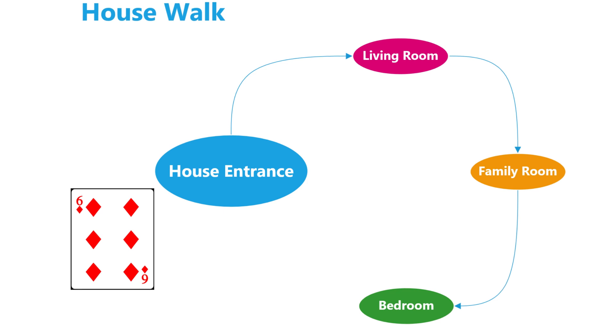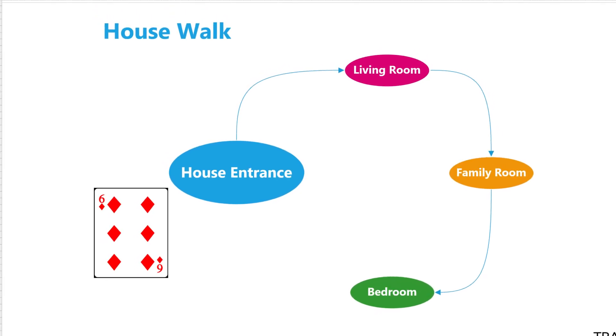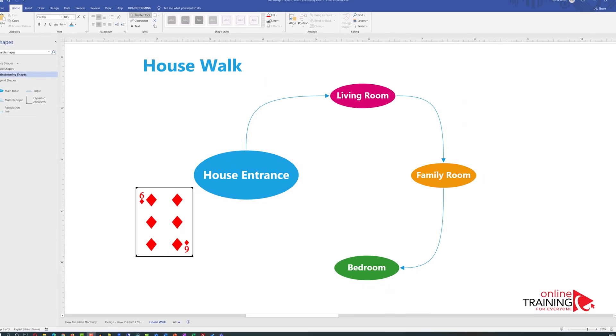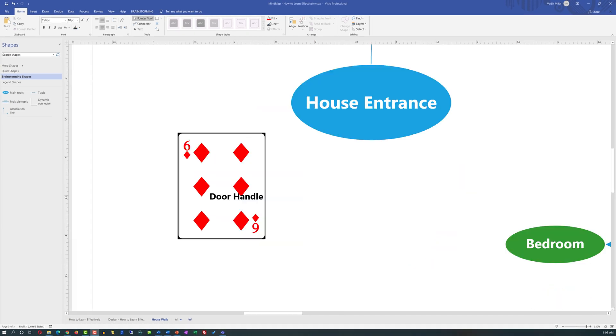Let's say that you are trying to memorize six of diamonds and associate it with the front entrance. To build a strong association, it has to be something unusual and something very weird, something that doesn't exist in the real world. This way, our brain will remember it.